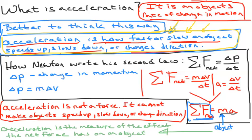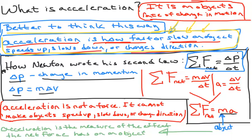Newton did not write his second law as sum of forces equals MA. What he wrote was that the net force is equal to the rate of change in momentum — delta P over delta T, where delta P is change in momentum, equal to mass times change in velocity.